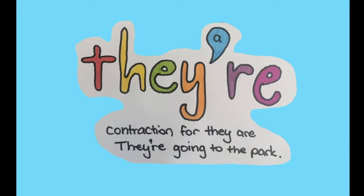T-H-E-Y-R-E. This 'there' is actually a contraction for two words — they are. So what I've done is put a little 'a' in the apostrophe between the two words, so it reminds you that it's actually taking away that letter. So instead of saying 'they are going to the park,' we can squish it into a contraction and instead say 'they're going to the park.'